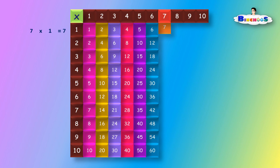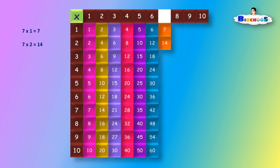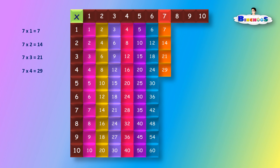7 times 1 is equal to 7. 7 times 2 is equal to 14. 7 times 3 is equal to 21. 7 times 4 is equal to 28. 7 times 5 is equal to 35.